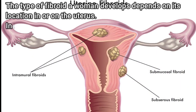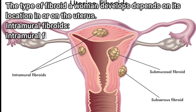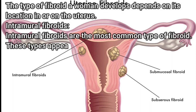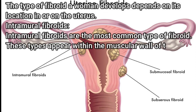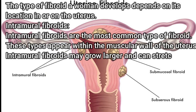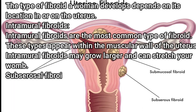Intramural fibroids are the most common type of fibroid. These types appear within the muscular wall of the uterus. Intramural fibroids may grow larger and can stretch your womb.